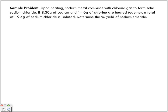Let's look at a slightly more difficult sample problem. Upon heating, sodium metal combines with chlorine gas to form solid sodium chloride. If 8.30 grams of sodium and 14.0 grams of chlorine are heated together, a total of 19.5 grams of sodium chloride is isolated. Determine the percentage yield.